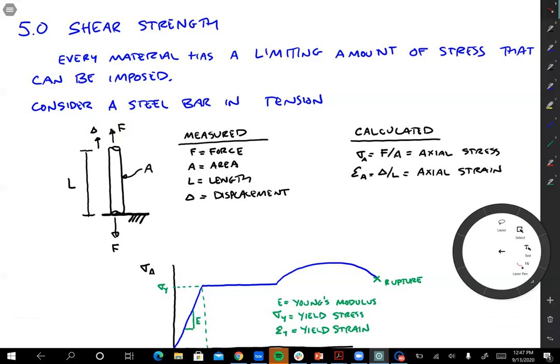The force maybe we would use a load cell, the displacement an LVDT, something like that. We can also measure the cross-sectional area of the bar and its length. So we have four measured quantities: force, area, length, and displacement. And then we can calculate from that the stress and the strain. Axial stress is just the force divided by the cross-sectional area, and the axial strain is the change in length divided by the initial length of the specimen.